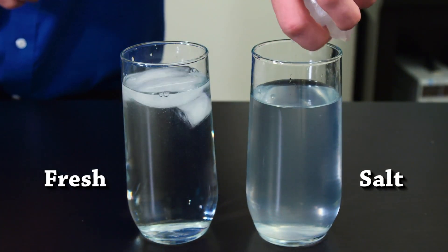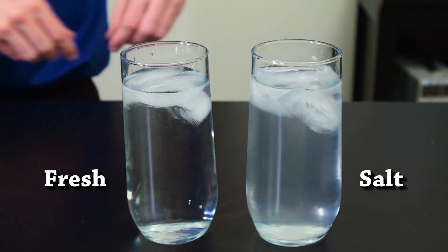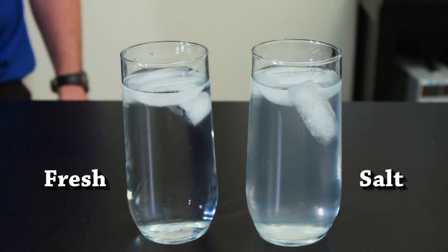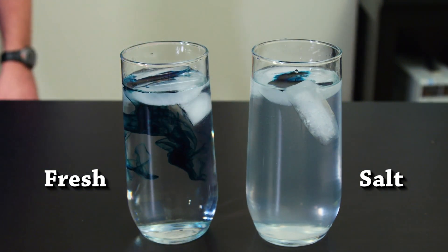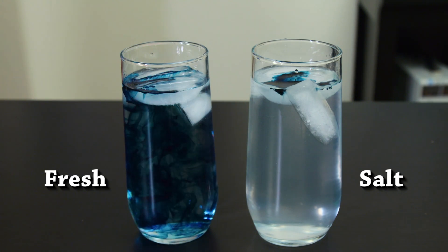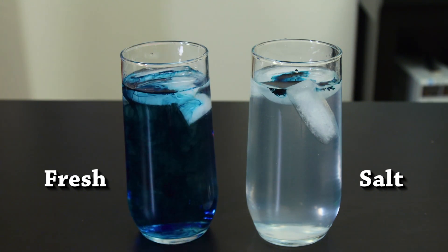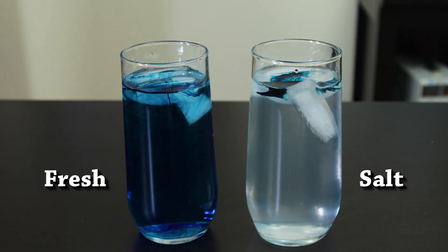The correct answer is density. In the fresh water, as the ice melts, it becomes cold water which sinks to the bottom. But that doesn't happen in the salt water. When the ice melts, it becomes cold, fresh water which floats on top of the salt water.